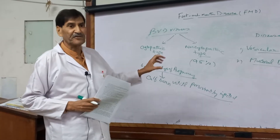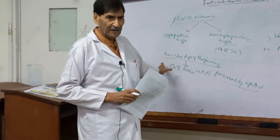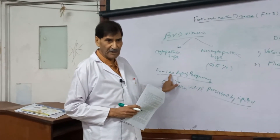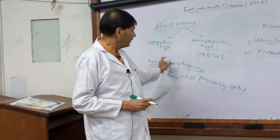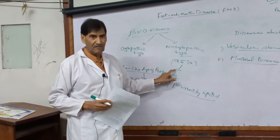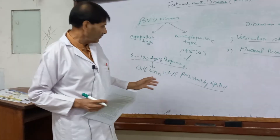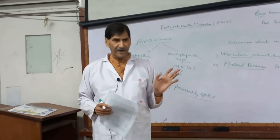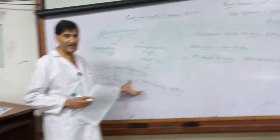A calf which is developing inside the uterus of the mother cow, if at the stage of pregnancy of 60 to 120 days there is infection with the Non-Cytopathic BVD virus, the calf which will be born will be persistently infected — infected for its entire life — and it will not be able to produce antibodies.